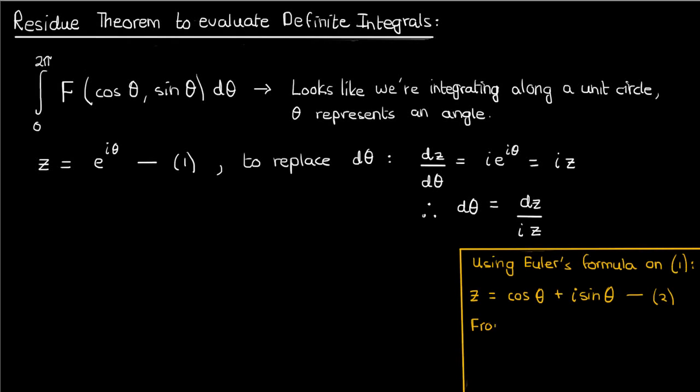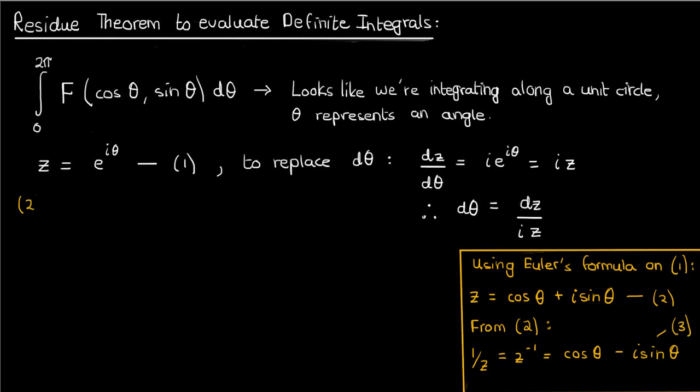We're going to use Euler's formula to expand equation 1 in terms of sines and cosines. We can also write another equation involving 1 over z, which would just be the exponential of negative i times theta. Expanding this out using Euler's formula will yield cos θ minus i sin θ. I'll just call this equation 3. Now let's add equations 2 and 3 and get an expression for cos θ in terms of z. We can also subtract 2 and 3 to get an expression for sin θ in terms of z.